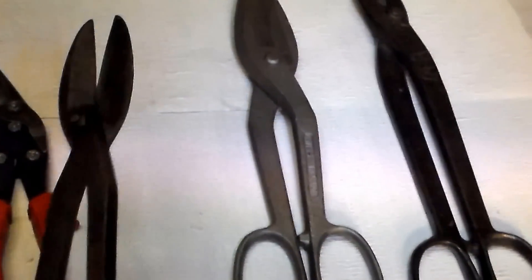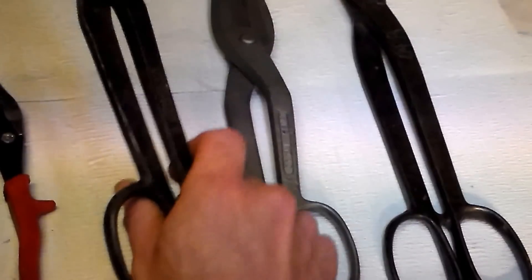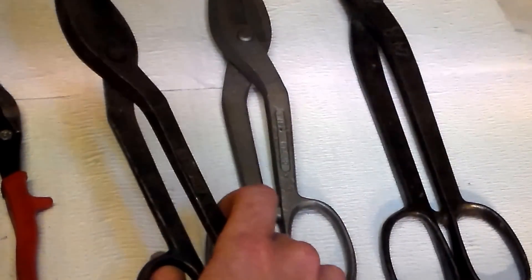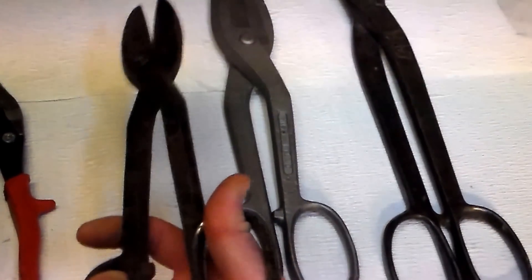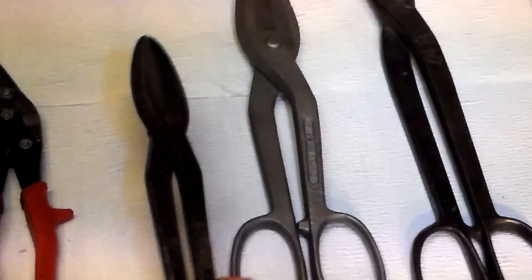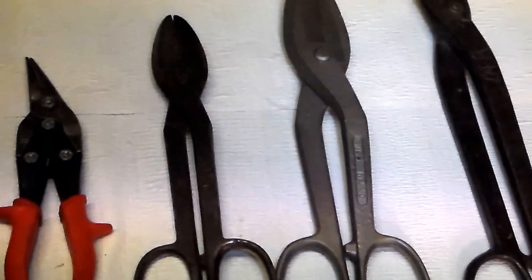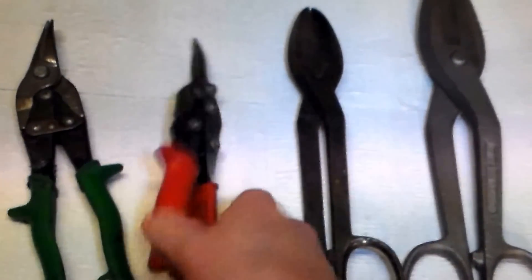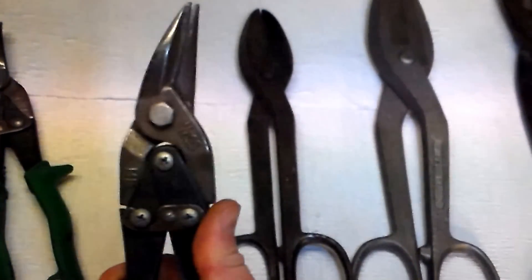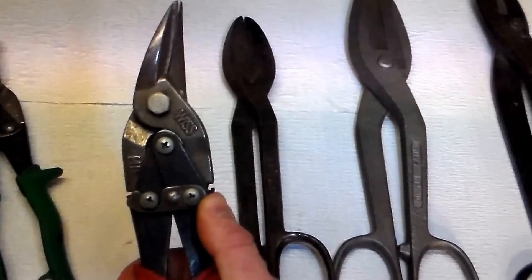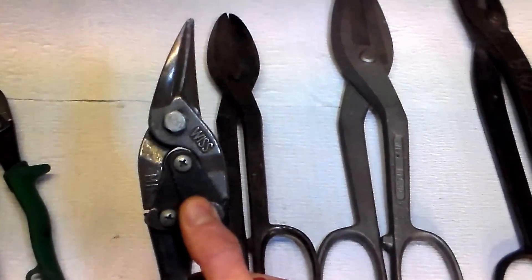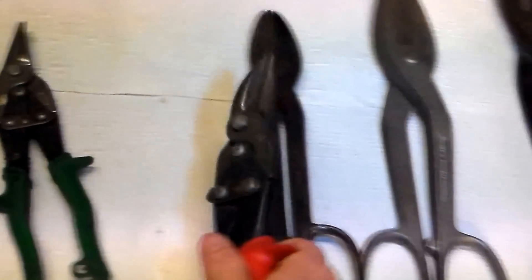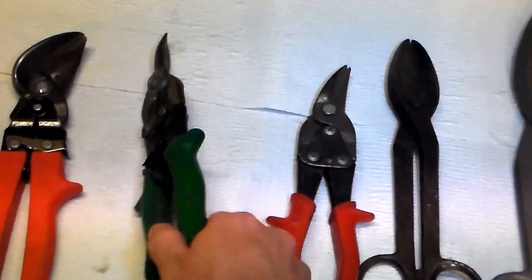And then you got these little peanut whistles here. They're cute. I don't particularly like using them, but they can definitely get the job done if they're sharp enough of course. Then you have your regular Wiss tin snips which you can buy at Home Depot. These are probably the most notorious brand of tin snips that are out there. You got your reds and your greens.